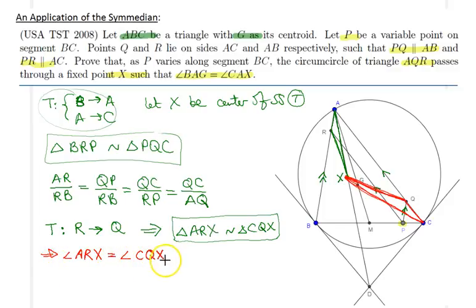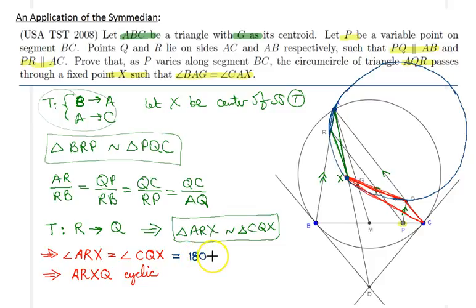If that's the case, then please convince yourself that quadrilateral ARXQ is in fact a cyclic quadrilateral. That's the case because angle CQX is simply equal to 180 degrees minus angle XQA.